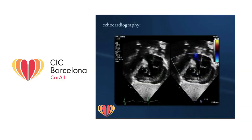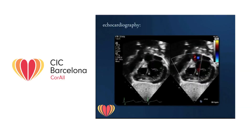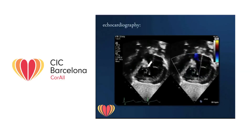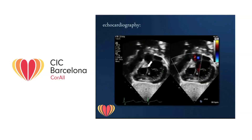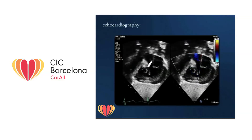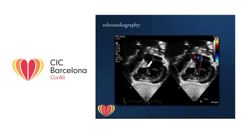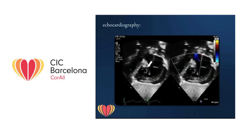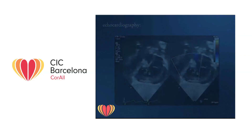Echocardiography usually allows accurate diagnosis and quantification of atrial septal defect size. This is a case of transposition of the great arteries with a large posterior ventricular septal defect shown on the subcostal view. The defect, located in proximity of the atrioventricular valves, is not related to the great arteries.